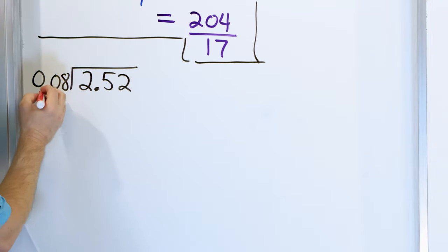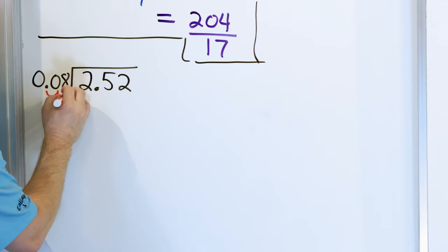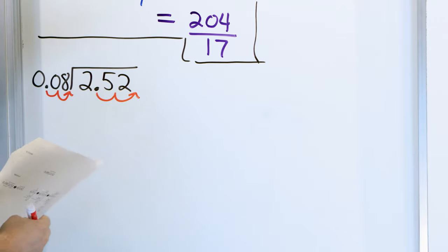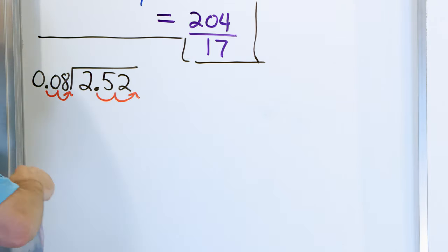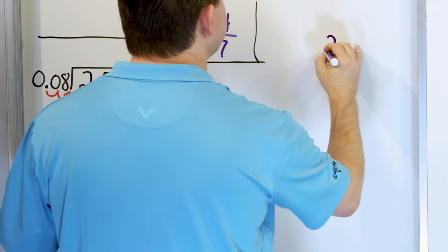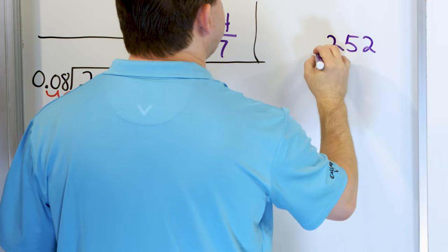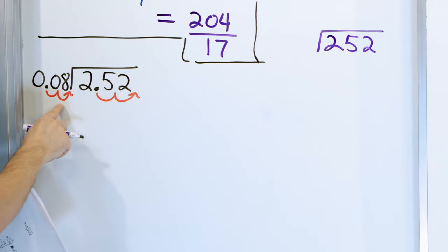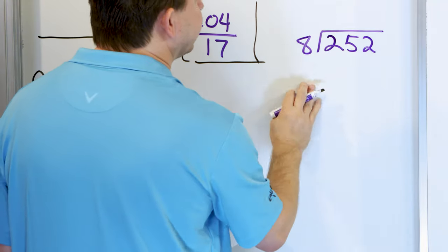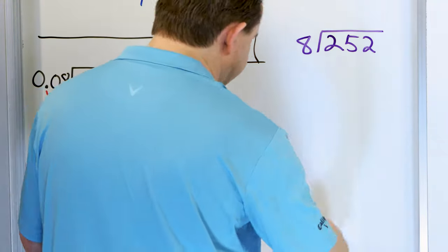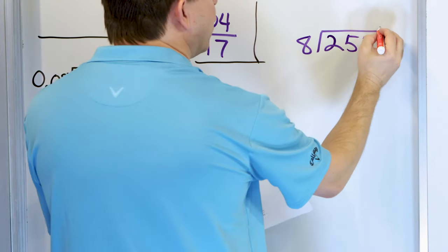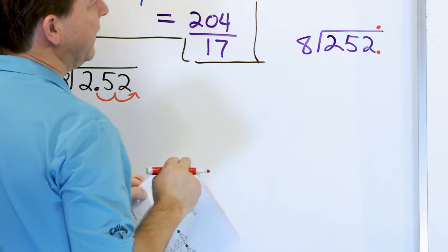On the outside, we don't want any decimals, so we move two spots to the right. That means we move two spots to the right on the inside as well. So we're actually going to be solving the related problem of 252 divided by 8. We can put the decimal here because we know there's a decimal after every whole number, and so the decimal in the answer has to be above there as well.